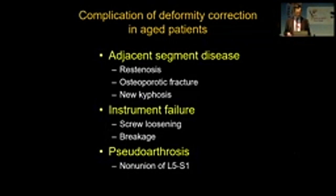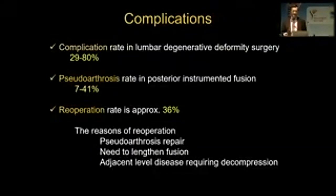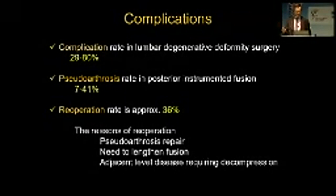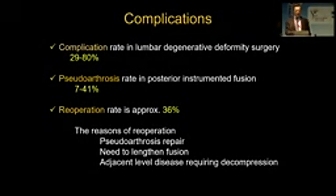What are the complications of deformity correction in the aged population? Adjacent segment disease is one of them. Instrument failure, screw loosening, and breakage is another — it's quite common. And pseudoarthritis, especially at the L5-S1 level. Because of these complications, the complication rate has been reported around 50%. If we are trying to correct significant kyphosis in a 75- or 80-year-old person, we must tell them that a 50% complication rate is expected. Pseudoarthritis rate is between 7 and 41%, and reoperation rate is about 36% — meaning one out of three patients will need another surgery in the future.